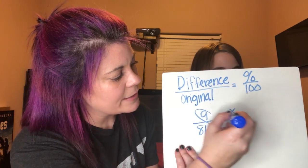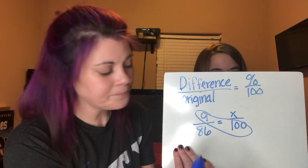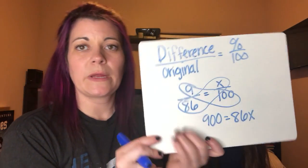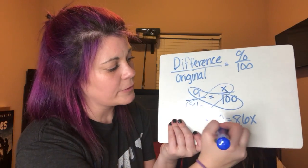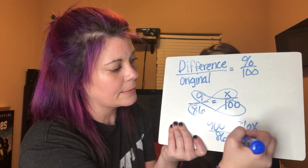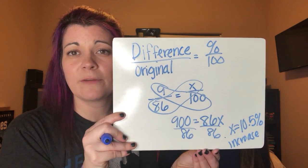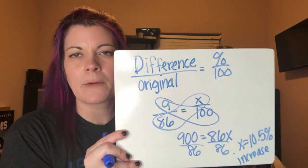We're going to use the butterfly method: 9 times 100, and then 86 times x. 9 times 100 is 900; 86 times x is 86x. We solve for x by dividing both sides by 86, and you get x equals 10.5. So it's a 10.5 percent increase, because we went from 86 to 95. I rounded to the tenth place.